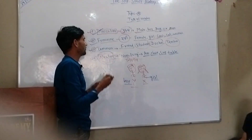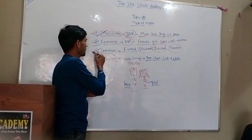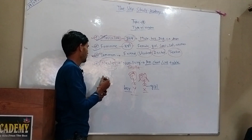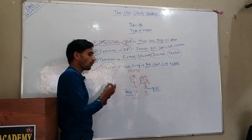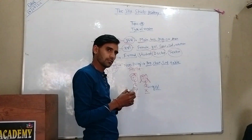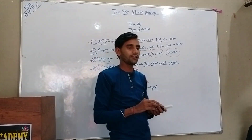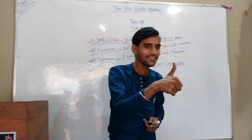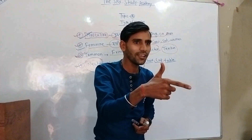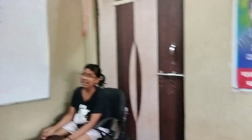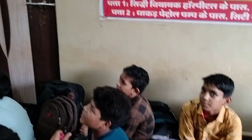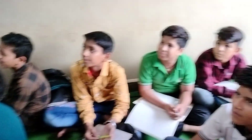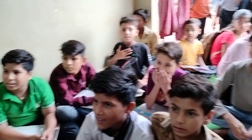So there are four genders in total: first, second, third, and fourth. Okay, that is over.